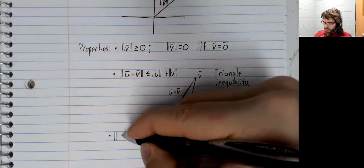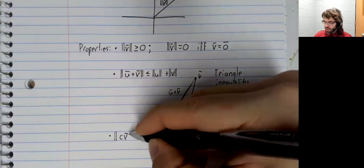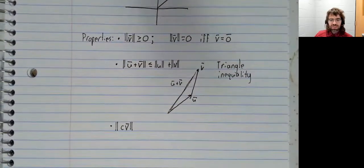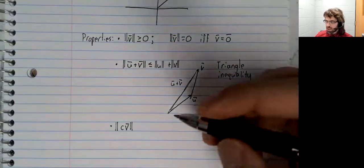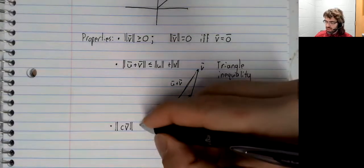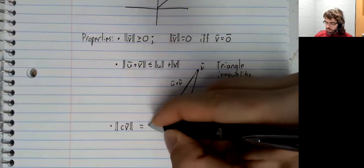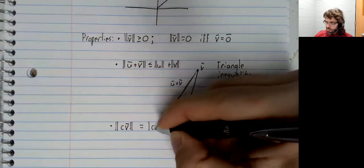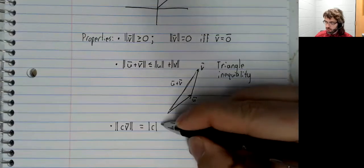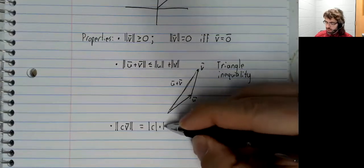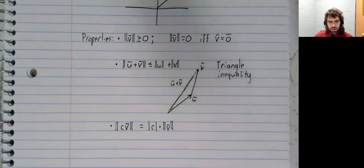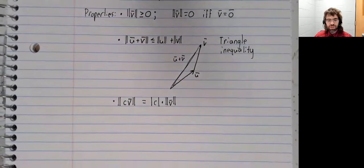Finally, we know that multiplying a vector by a scalar scales its length. The norm of a scalar times v is the absolute value of the scalar times the norm of v.